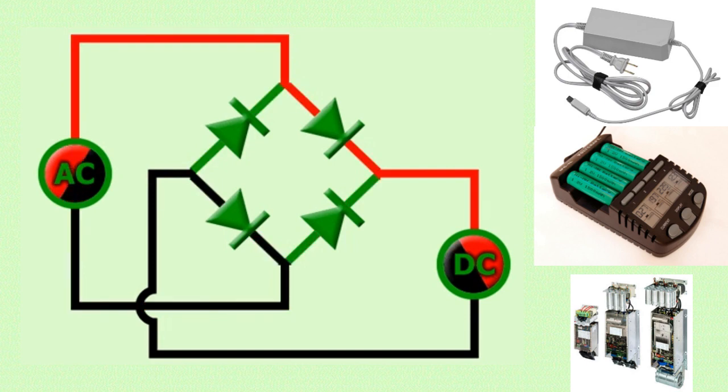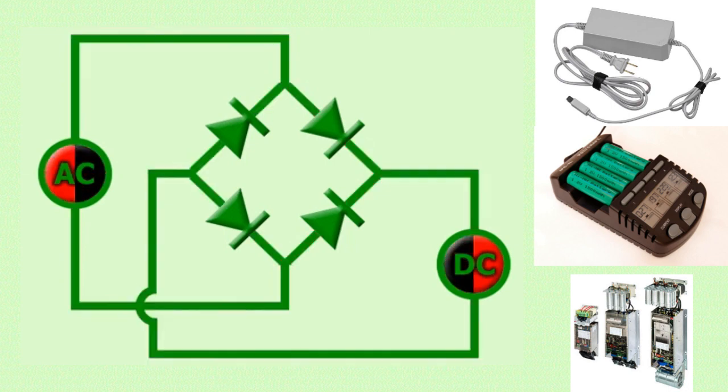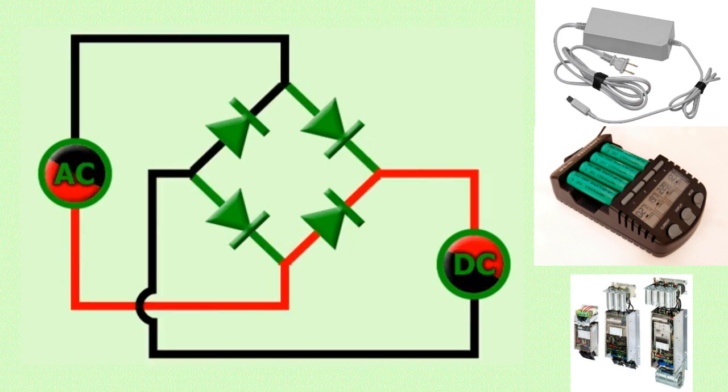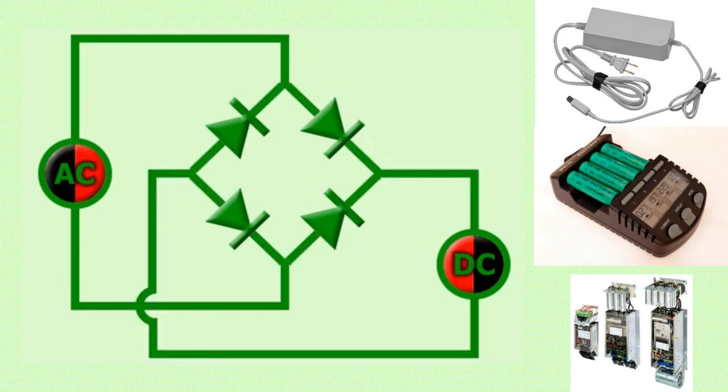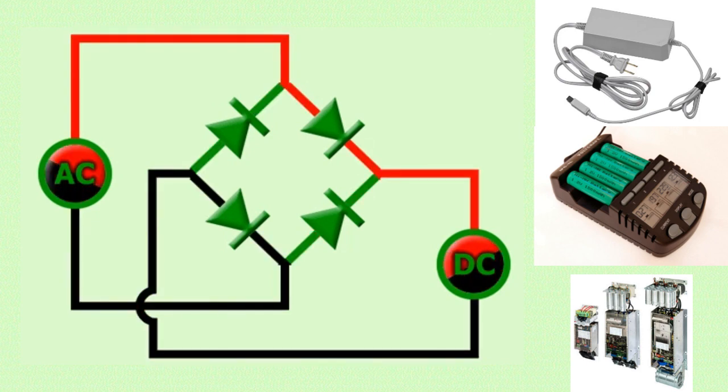The diode bridge rectifier circuit consists of four diodes connected in a bridge configuration. The AC input is applied to the diode bridge through two input terminals, and the DC output is obtained from the two output terminals.